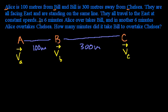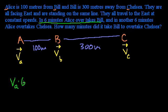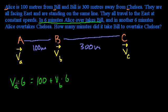They all travel to the east at constant speeds. In six minutes, Alice overtakes Bill. So this tells us the distance Alice travels in six minutes: it would be the velocity of Alice times six. And she overtakes Bill, so that means she goes 100 meters more than Bill went — 100 meters plus the distance Bill went, which is velocity of Bill times six. This tells us Alice went 100 meters more than however far Bill went in six minutes.